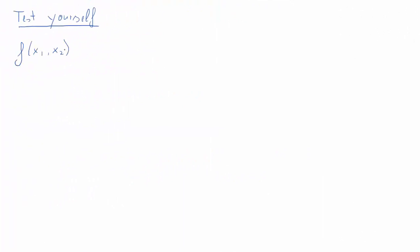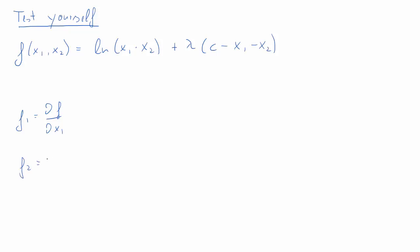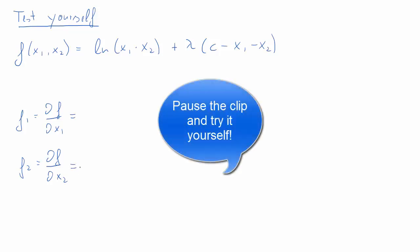Now it is time to test your understanding of partial derivatives. Here's an example I want you to try. The function is f of x1 and x2, and it is the log of x1 times x2, plus lambda times the quantity c minus x1 minus x2. What I want you to calculate is the partial derivative of f with respect to x1, and f2 — the partial derivative of f with respect to x2. Pause the clip and try it yourself.